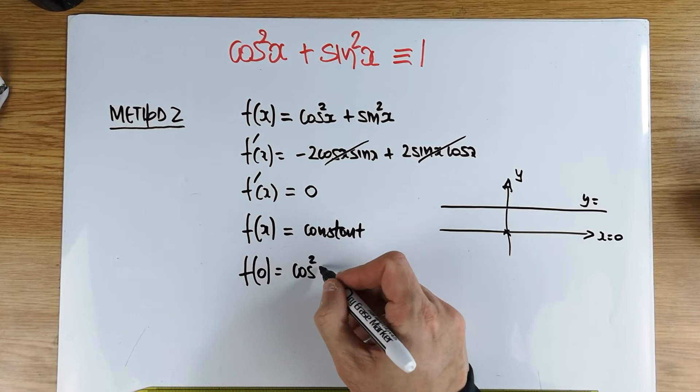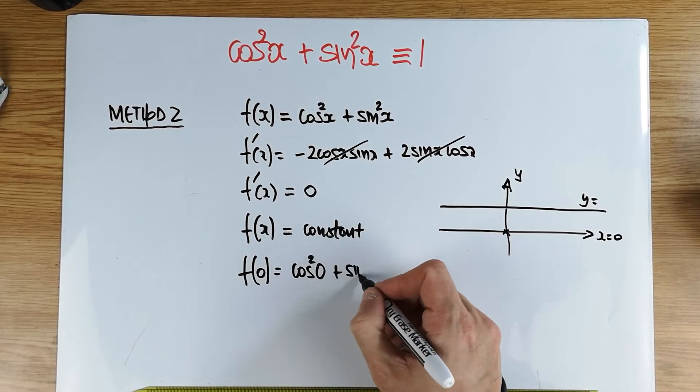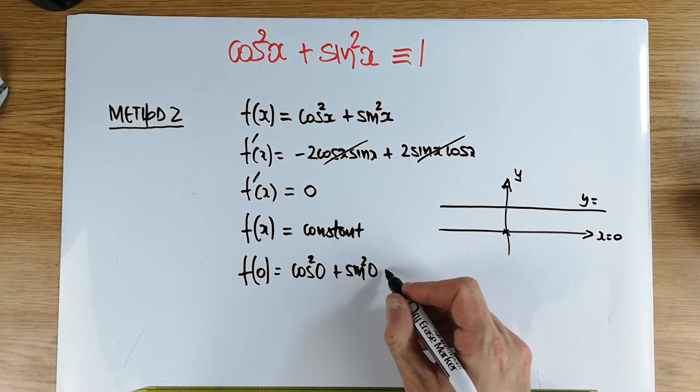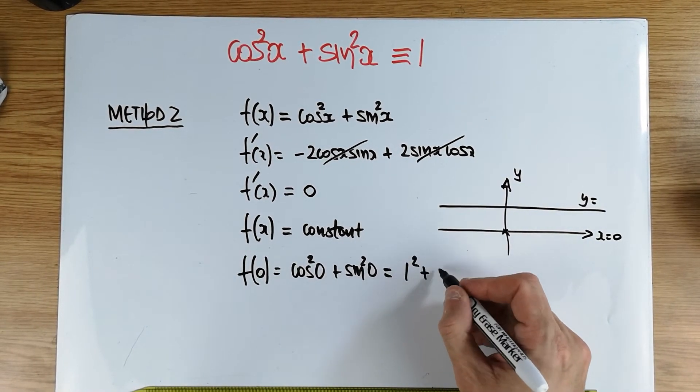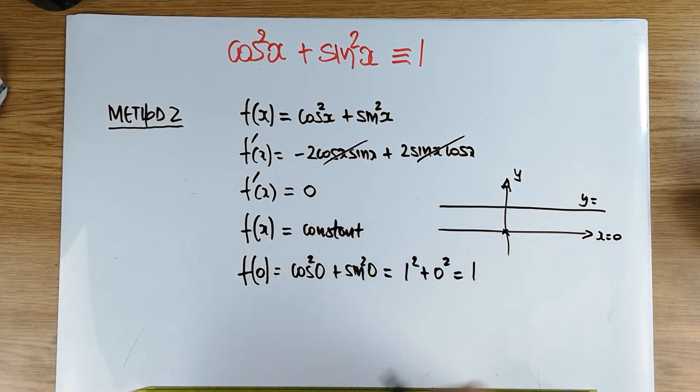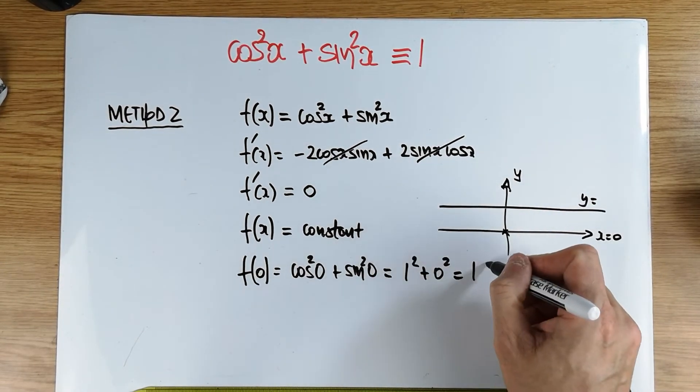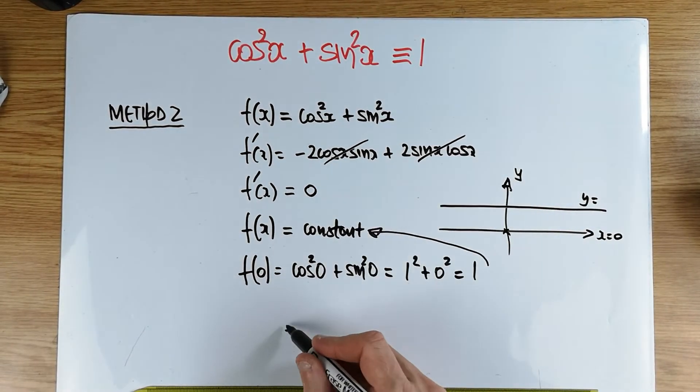And we're going to get, of course, cos squared of zero plus the sine squared of zero, which of course is equal to one squared plus zero squared, which of course is equal to one. And therefore, this constant value is one.